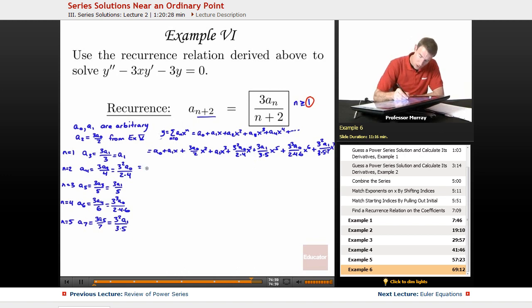We can segregate out the A0 terms and the A1 terms. A0, it looks like we got 1 plus 3 halves x squared plus 3 squared over 2 times 4, x to the 4th, plus 3 cubed over 2 times 4 times 6, x to the 6th.